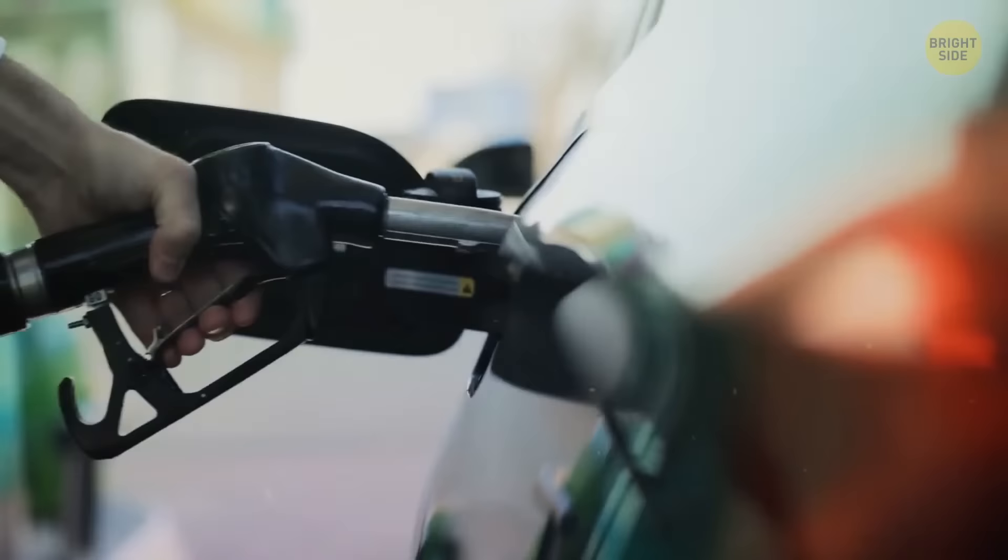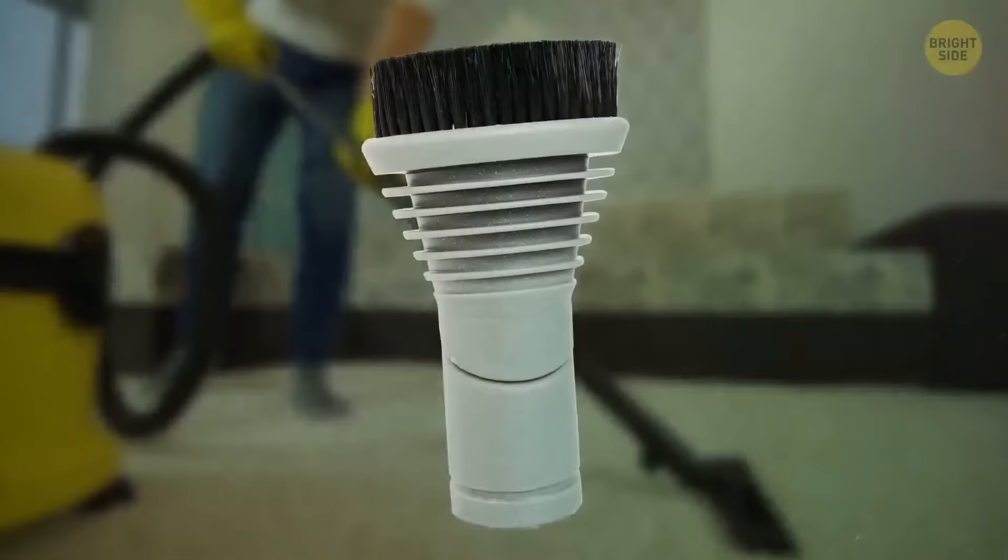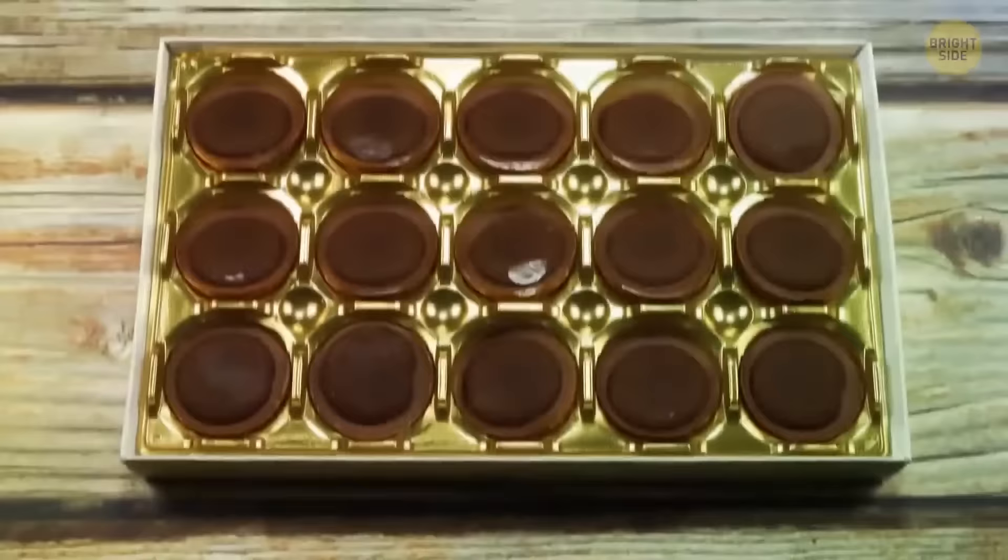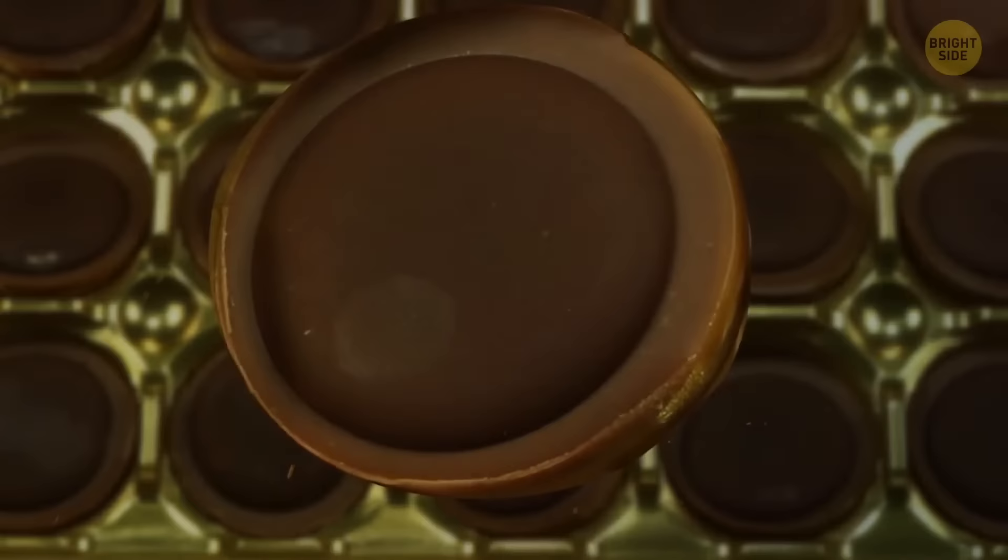Vacuums come with so many attachments, but do any of us really know what that one with long bristles is for? It's for dusting and is perfect for cleaning framed art, blinds, and lampshades. Those tiny holes in the chocolate box tray actually serve a function. Push the hole near the candy and it'll pop straight out with you having to get your hands dirty.